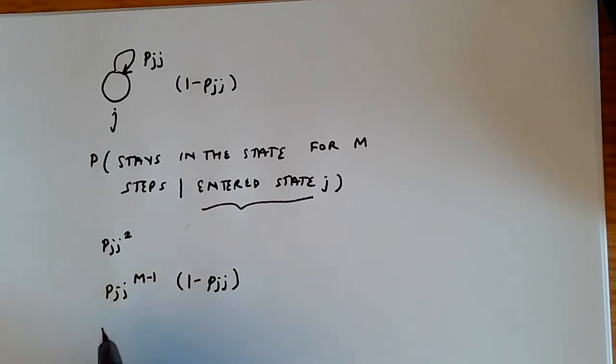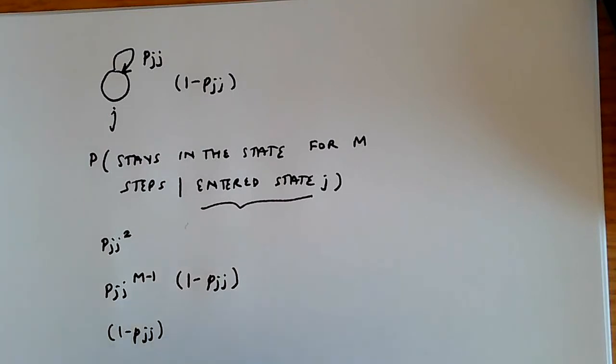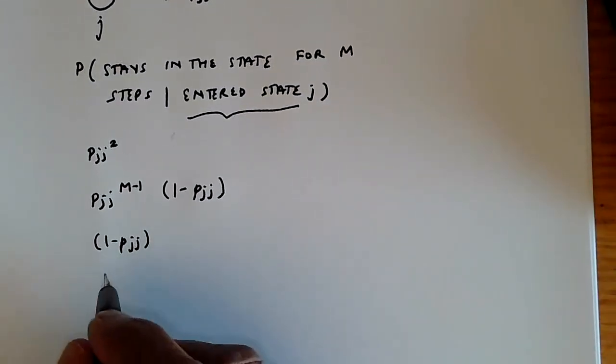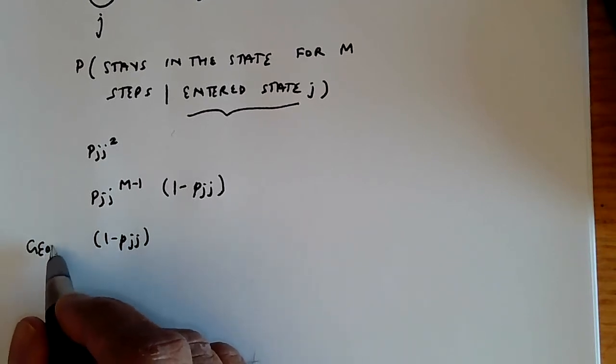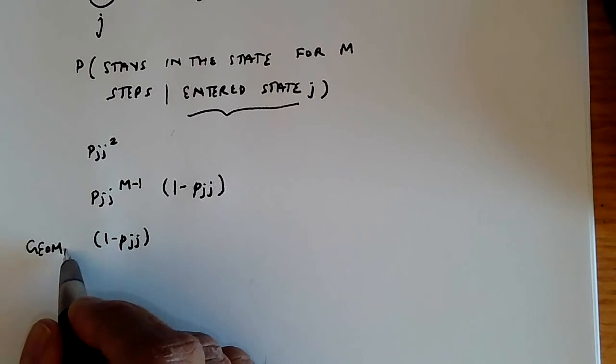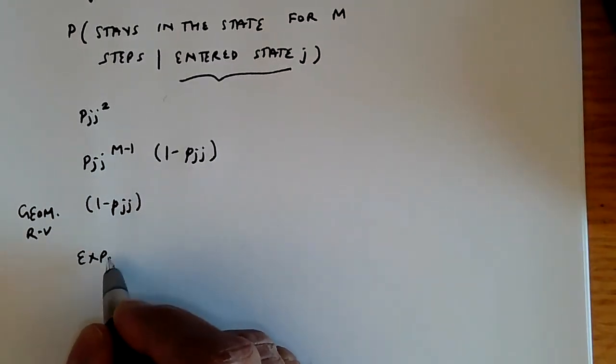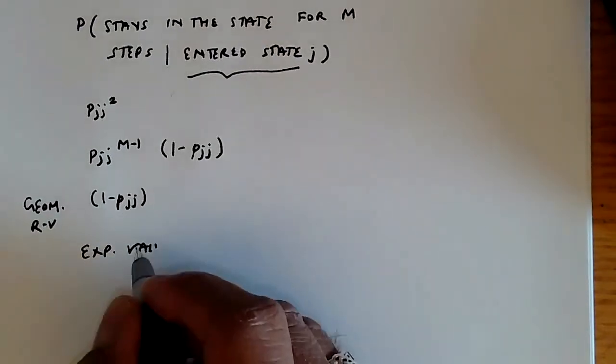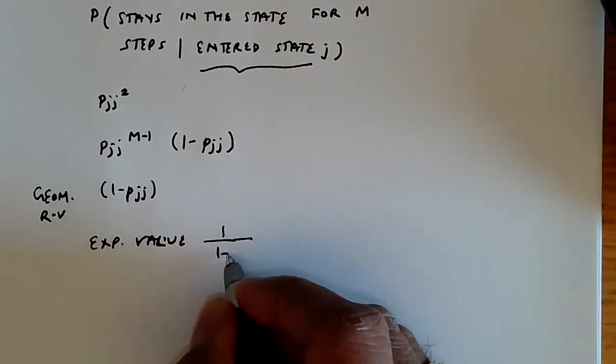So, this is a geometrically distributed random variable with the parameter 1 minus pjj. And from standard probability, we know that the expected value of a geometric random variable is given by 1 over its parameter. And so, the expected value of this is 1 over 1 minus pjj.